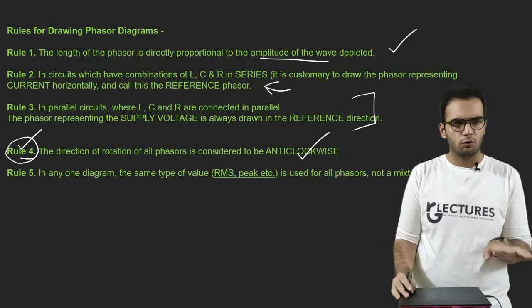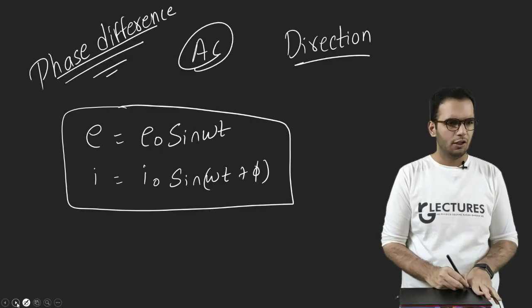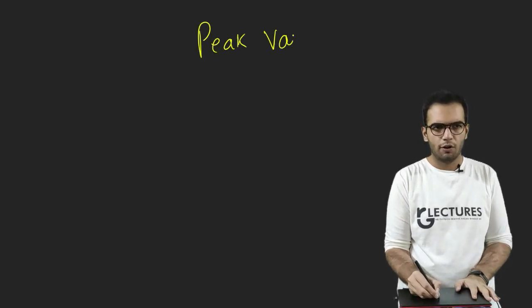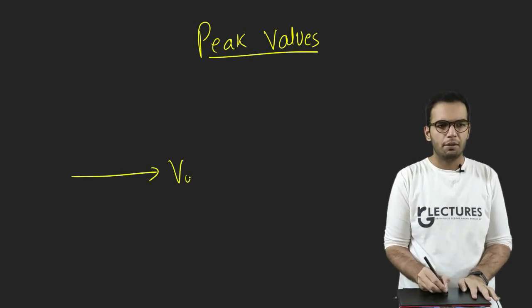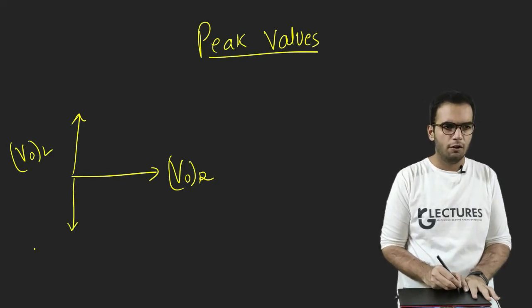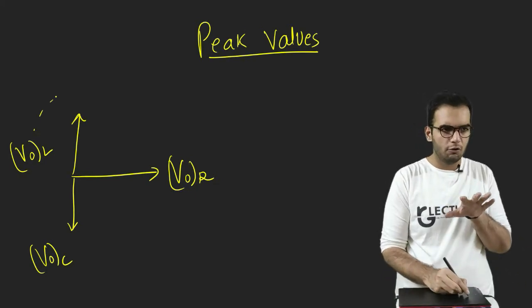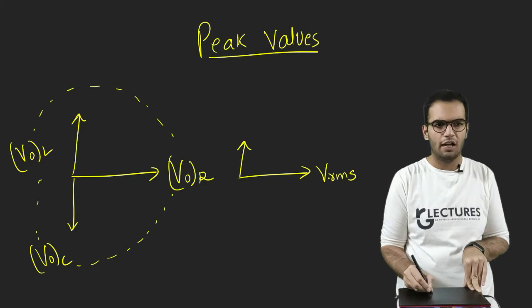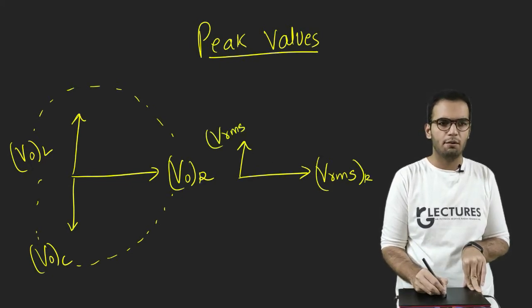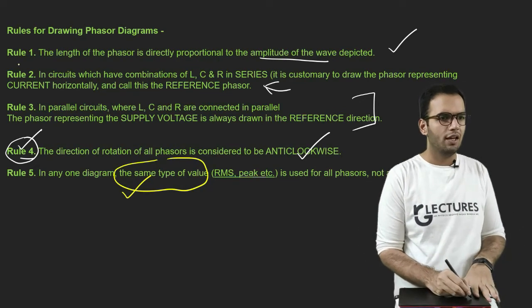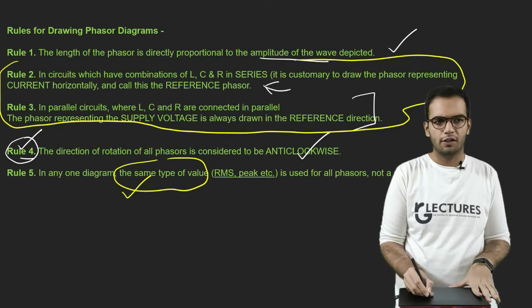Rule 5: In any one diagram, the same type of value is used for all Phasors — not a mixture. This is a theory video, so you may not fully understand Phasors here since they are best understood in application. For example, if you are drawing peak values, you must use the peak value of everything — peak voltage in resistor, peak voltage in inductor, peak voltage in capacitor. If you decide to use RMS values instead — RMS across resistor, RMS across inductor — that is fine, but you must use the same type of values throughout.